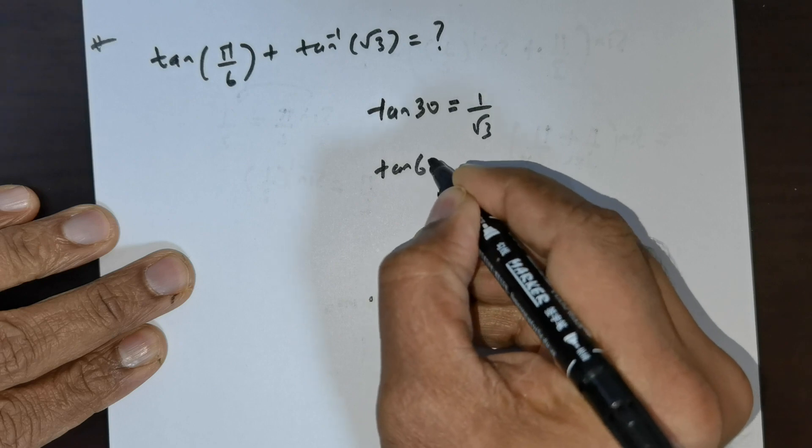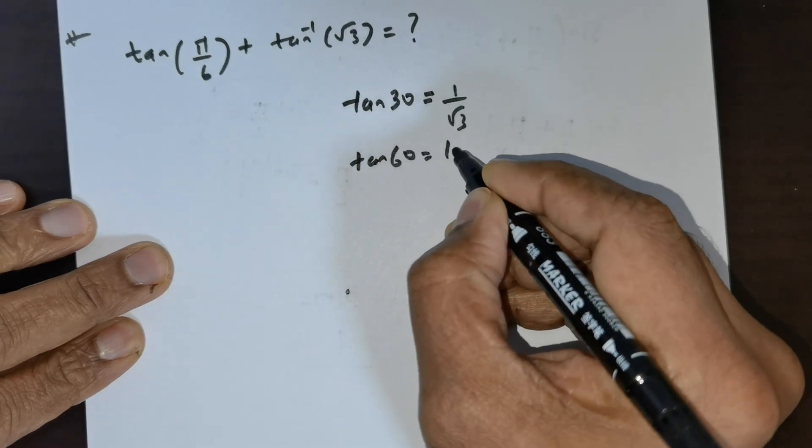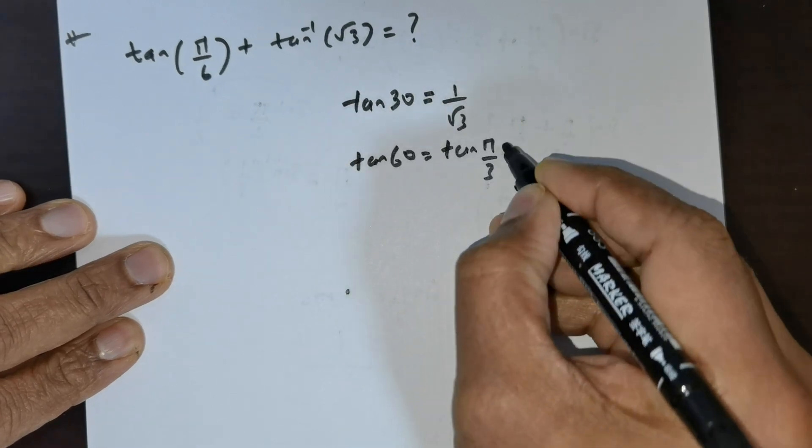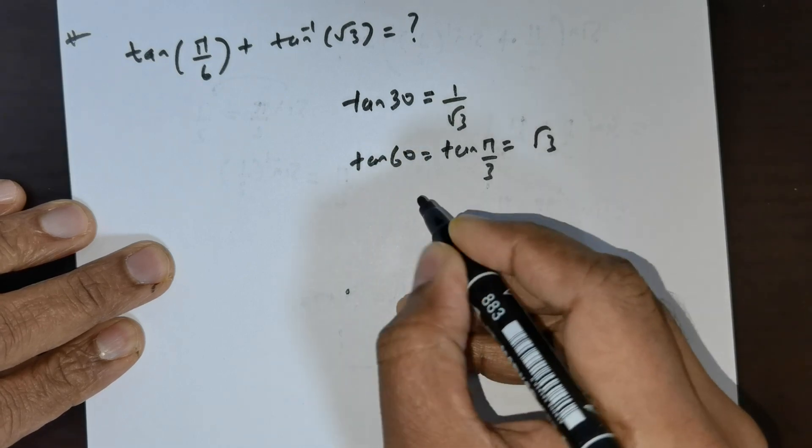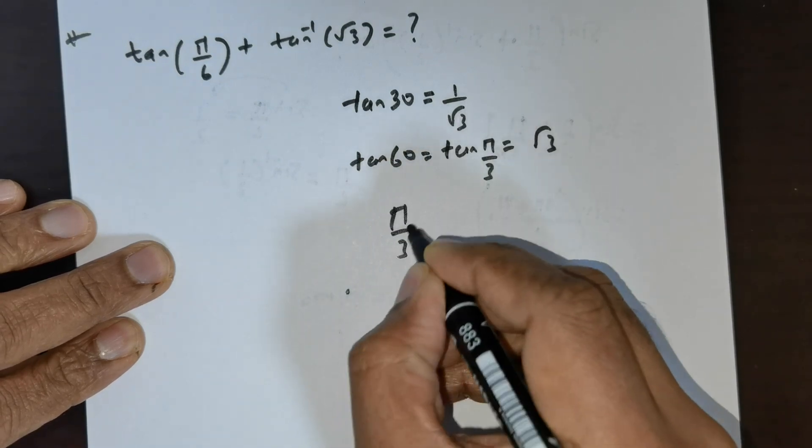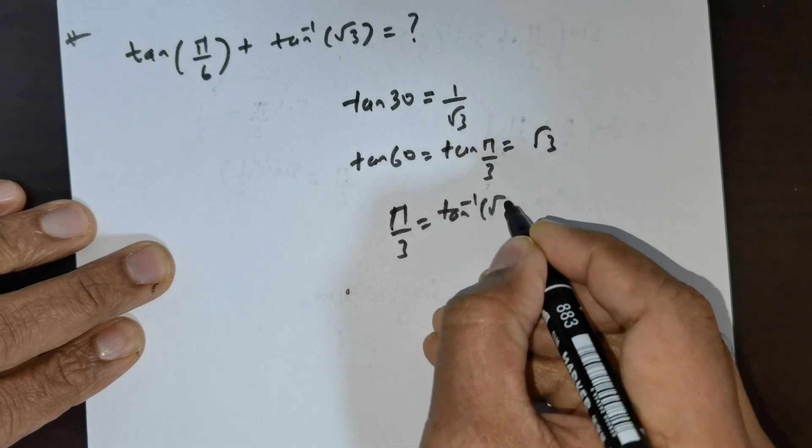Now you have tan 60. Tan 60 is nothing but tan of pi over 3, which is going to be root of 3. This is rewritten as pi over 3 equals tan inverse of root 3.